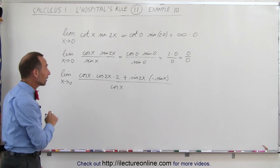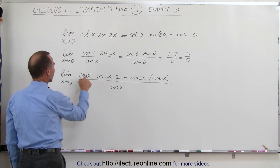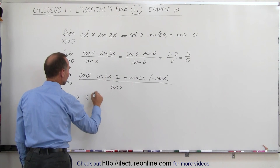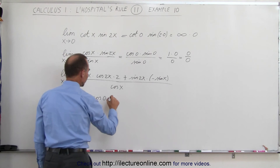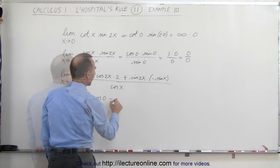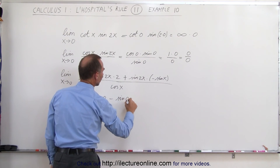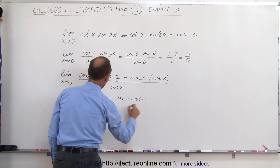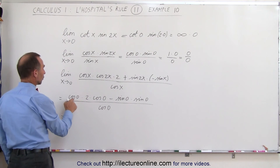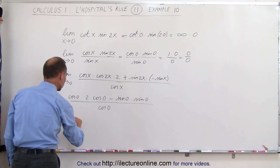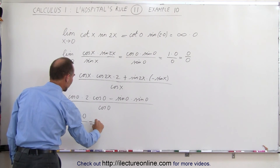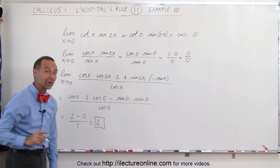Now we can go ahead and plug in the limit and see what we get. This would be equal to: plugging in 0, we get cosine of 0 times 2 times cosine of 0, minus sine of 0 times sine of 0, all divided by cosine of 0. The cosine of 0 is 1, so we get 1 times 2 times 1, which is 2, minus 0 times 0, divided by 1 — so 2 divided by 1, which equals 2. The limit of that function is 2.